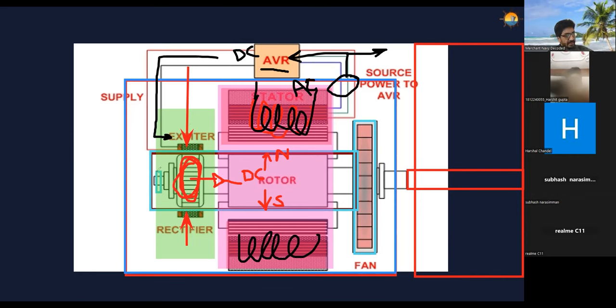Exciter is a generator. This green section. Exciter is nothing but a small generator which produces AC power for the rectifier. See, rectifier work is to rectify AC into DC. Why do you need DC? Why do you need DC? So here also you need DC. Here also you need DC from the top.